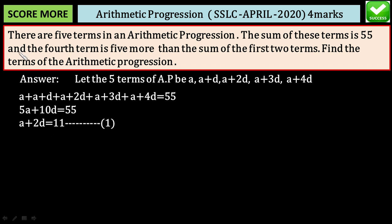And the 4th term is 5 more than the sum of the first 2 terms. The 4th term means a₄ is equal to 5 more. The first 2 terms are a₁ and a₂.